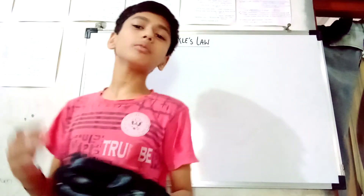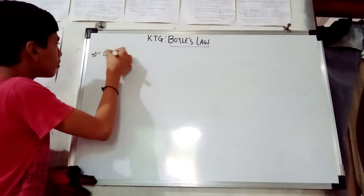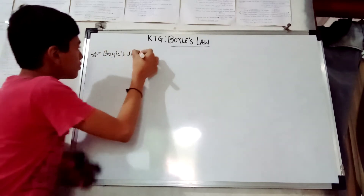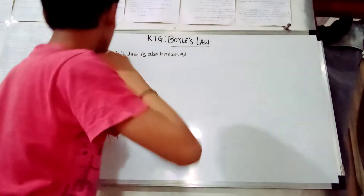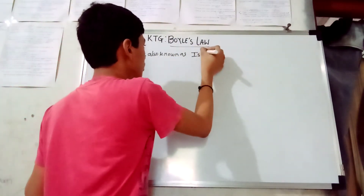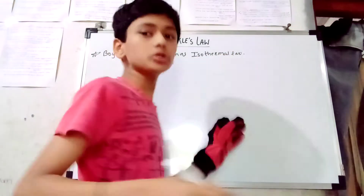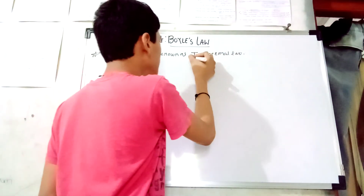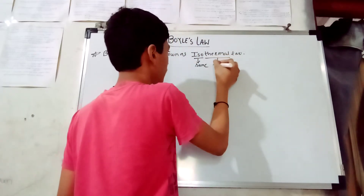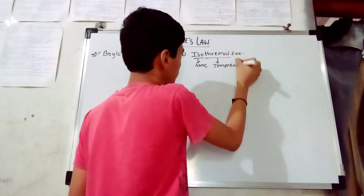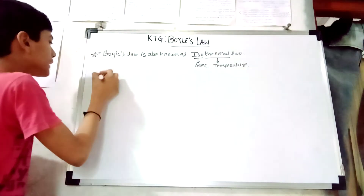So what is Boyle's law? Boyle's law is also known as the isothermal law. Here, 'iso' means same, constant, or equal — it means 'same' — and 'thermal' means temperature. So Boyle's law means same temperature, meaning that in Boyle's law, temperature is constant.